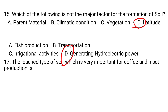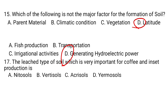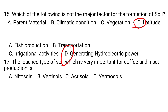Question number 17. The leached type of soil which is very important for coffee and insect production is: A. Nitosols, B. Vertisols, C. Acrisols, D. Hermosols. Nitosol is the leached soil found in Ethiopia, specifically in the southwestern highland parts of Ethiopia where rainfall is high throughout the year.